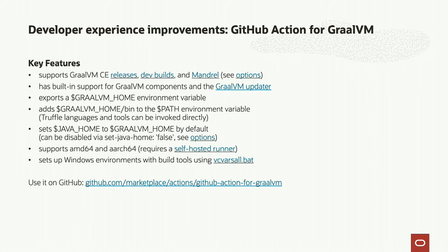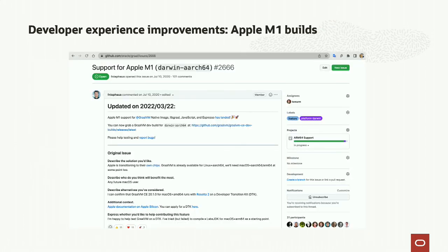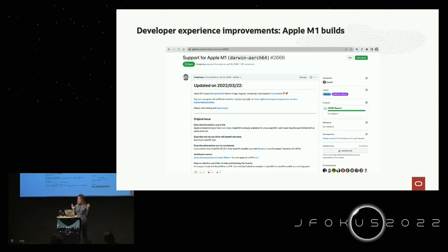We also have a GitHub Action for GraalVM — if you want to integrate it into your GitHub workflows it's very easy, and it works for both the Community Edition and Enterprise Edition. Looking at community feedback, the biggest update in the last release was Apple M1 builds — quite a few people were very happy about it. This is a great example of community collaboration: there was a GitHub issue with over 100 comments where people helped us test and build it since we didn't even have the infrastructure when M1 was first launched.